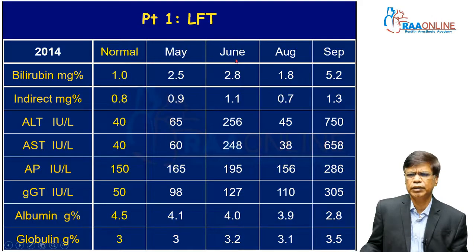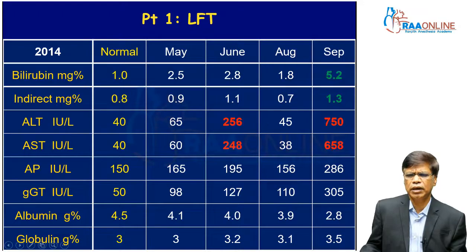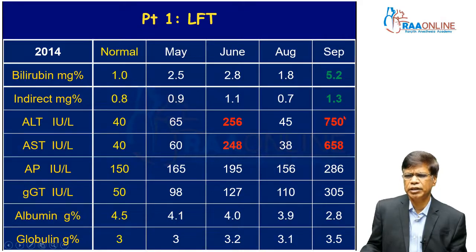This is the investigation chart over a period of time. On two occasions, ALT and AST showed a parallel rise of more than seven times normal, and six times normal, and on one occasion it was much higher. On three occasions the bilirubin was above the upper limit of normal, and the worst was in September.